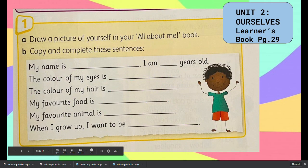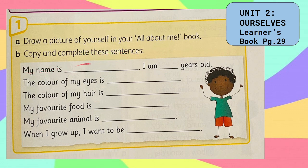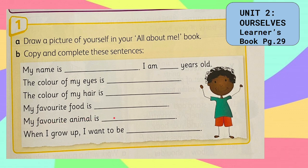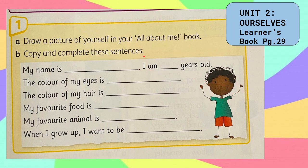In this activity you will draw a picture of yourself in your All About Me book. Copy and complete these sentences: My name is... I am 6 or 7 years old. The color of my eyes is... black, brown, or gray. The color of my hair is... blonde or brown. My favorite food is... My favorite animal is... And when I grow up, I want to be... Don't forget to complete these sentences in your All About Me book.